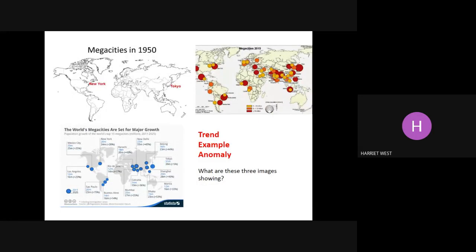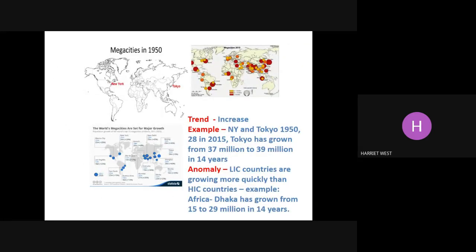Let's have a look at some maps. In 1950 there were just two megacities: New York and Tokyo. By 2015 there are 28 — a huge increase. Looking at the maps we can see how some of these megacities are growing. New York, one of the originals, will grow from 20 million to 24 million by 2025 — an increase of only 20%. But Dhaka in Bangladesh will grow from 15 million to 23 million — an increase of 53%. So these changes are happening more in LIC countries, those low-income countries, rather than HICs, the high-income countries. The trend is that it's all increasing.